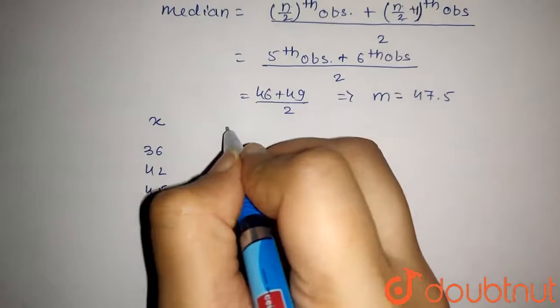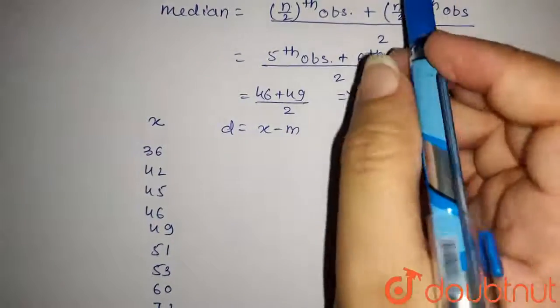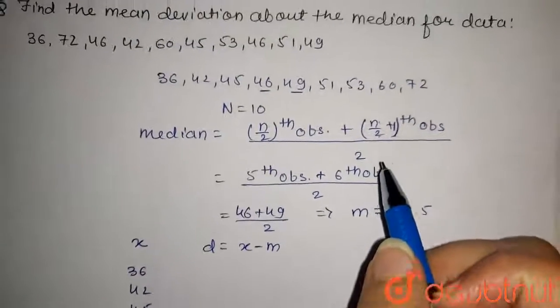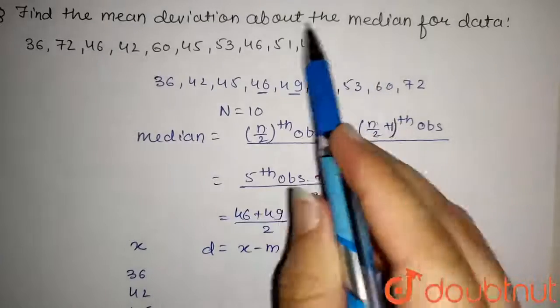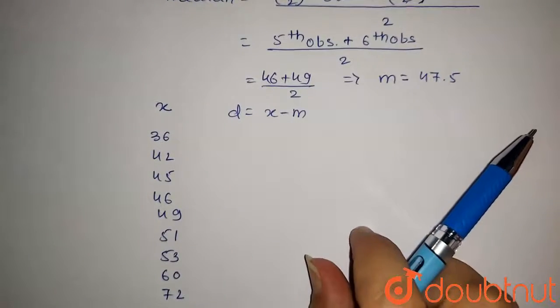Now the deviation d will be equal to x minus median. We have to find the mean deviation about median, so deviation will be x minus median.